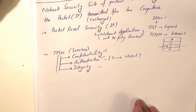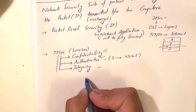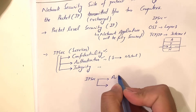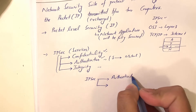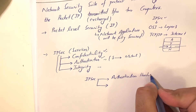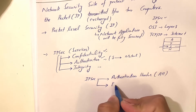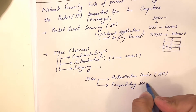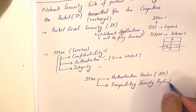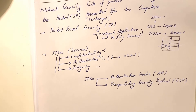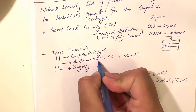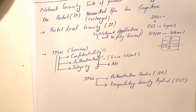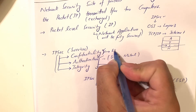IPsec is a suite of protocols and mainly uses two protocols. One is called Authentication Header, short form AH. The second is Encapsulating Security Payload, short form ESP. As the name suggests, Authentication Header is mainly responsible for authentication and integrity. For confidentiality, we use ESP.